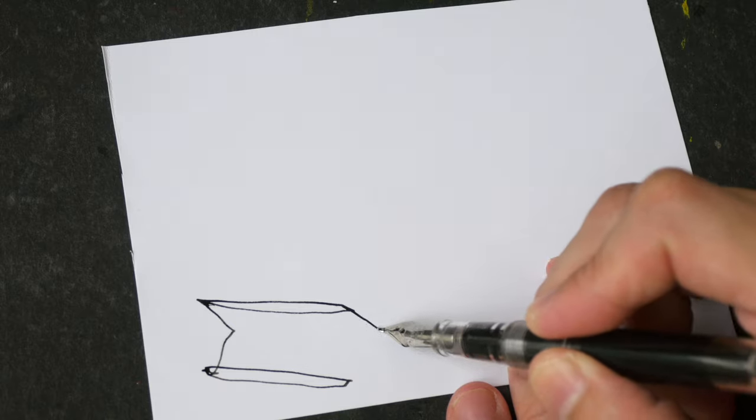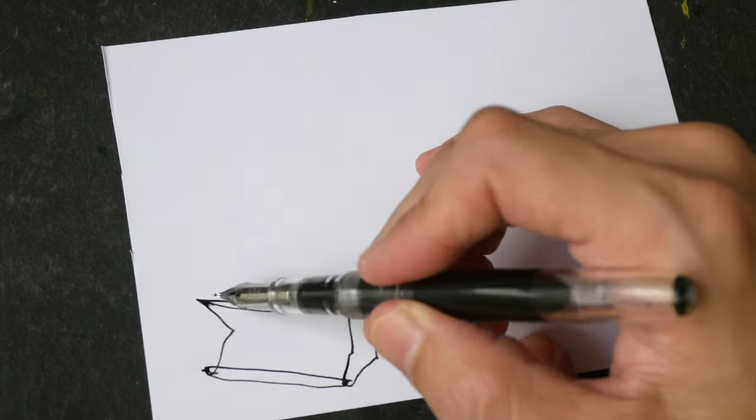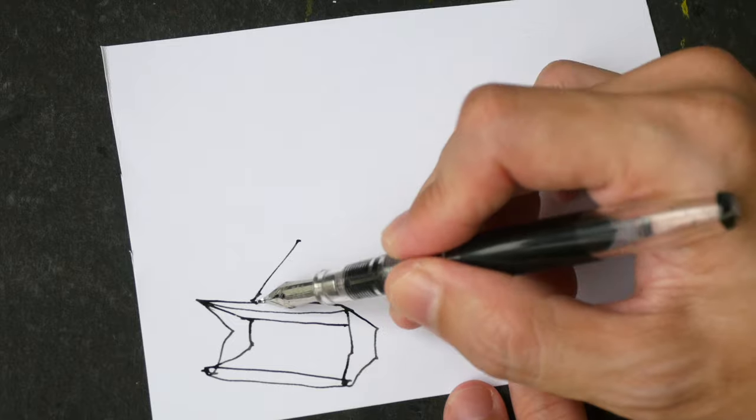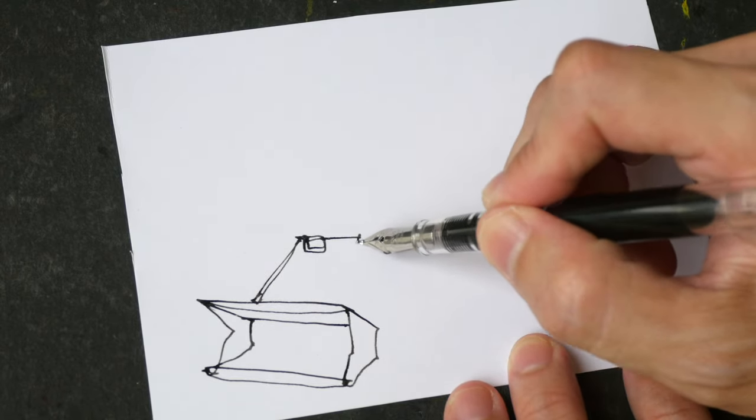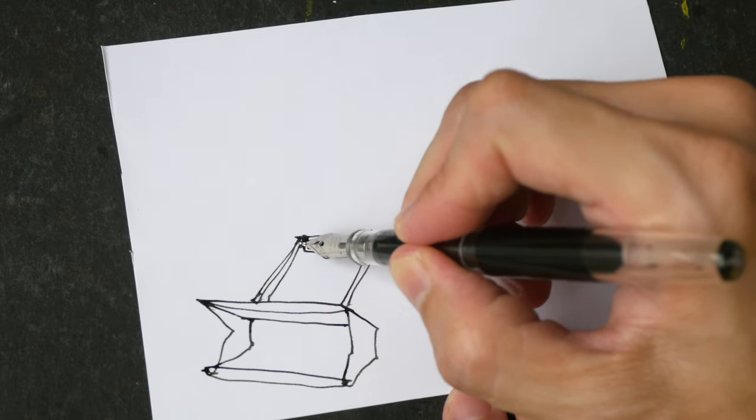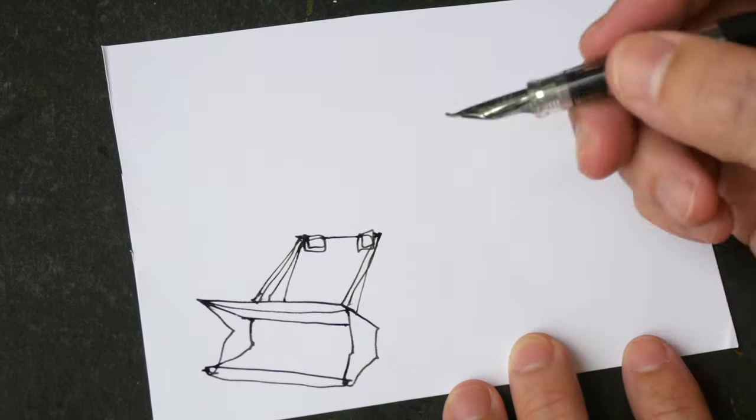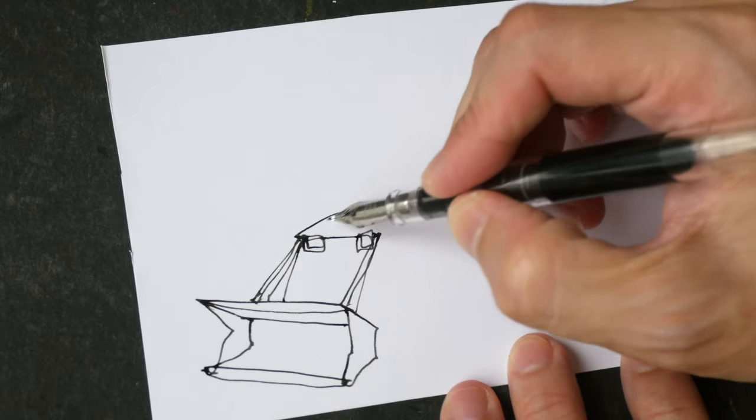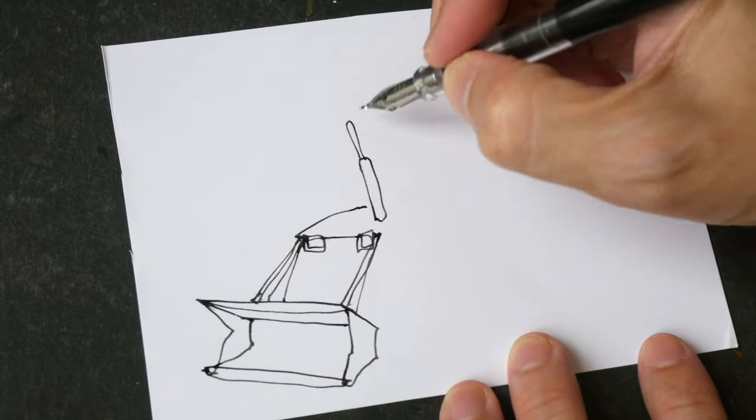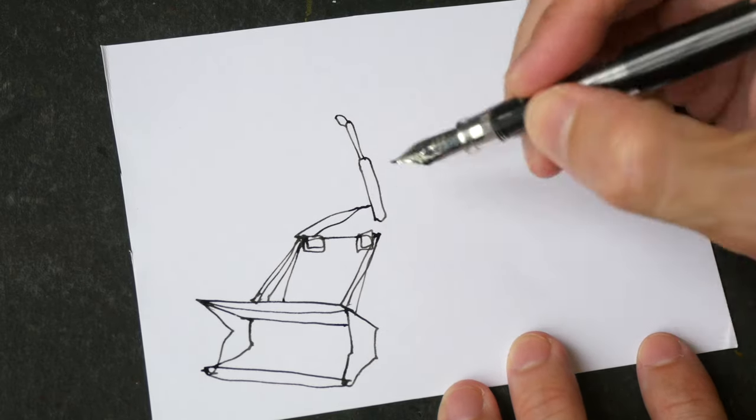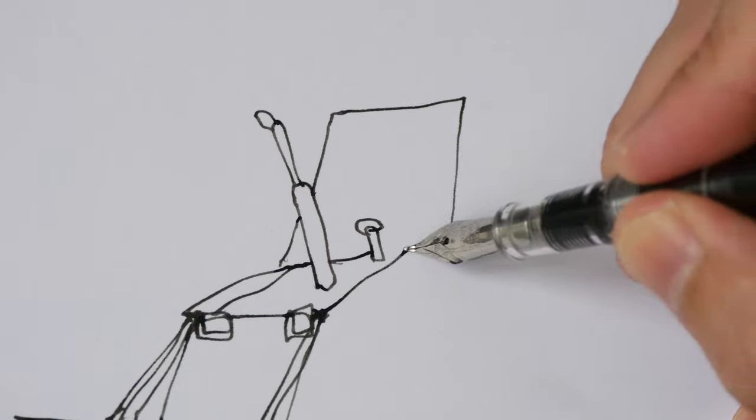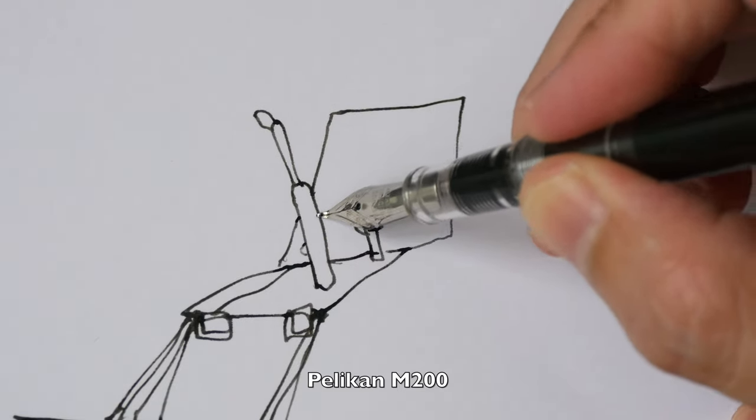Fude nib is one of my favorite pen nibs to use for drawing because you can create very expressive lines really easily, and you don't have to make a conscious effort to create those expressive lines. The thickness of the lines will vary depending on how you hold the pen, and when you are drawing, the way you hold your pen is always changing. Not drastically, it's always changing bit by bit, so that's how you can get those expressive lines.